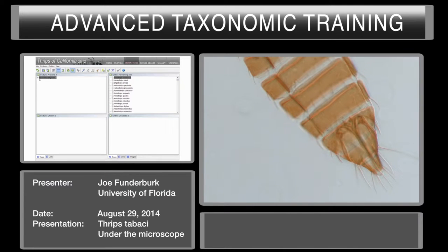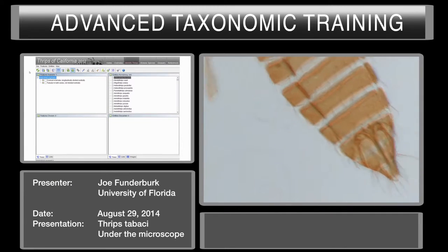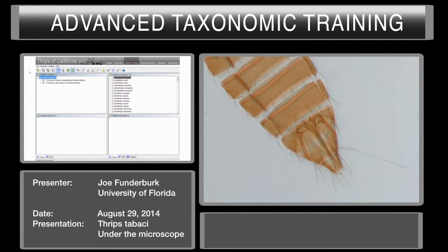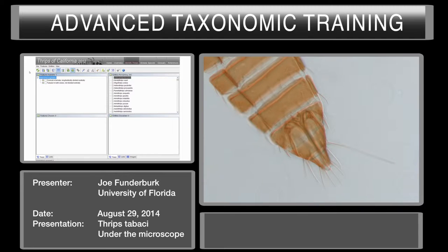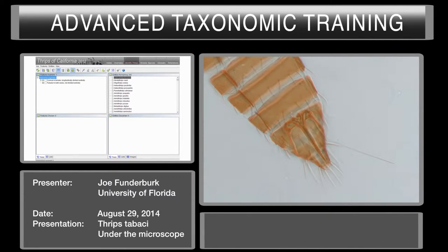It already has up the very first character, which is abdominal segment 10. So I'm going to click on abdominal segment 10. We know enough about thrips morphology to recognize which character to choose here — this is not tubular, but conical in the female and longitudinally divided ventrally. When I choose that, you can see in the entities discarded box that it has discarded 69 entities.